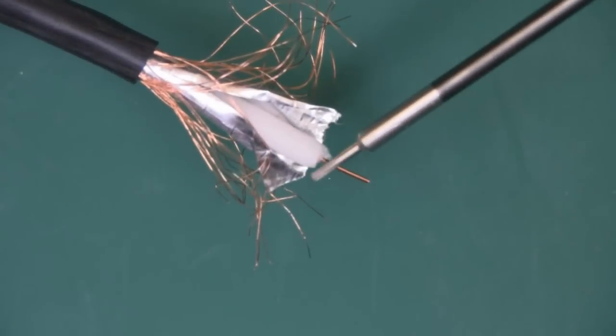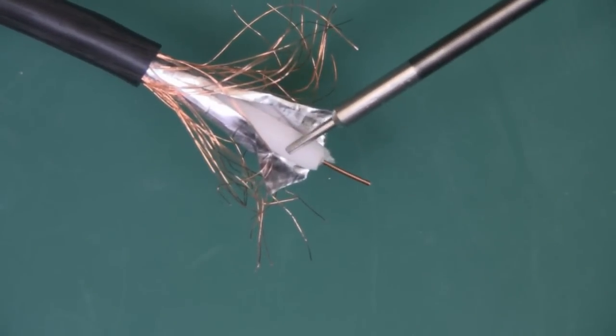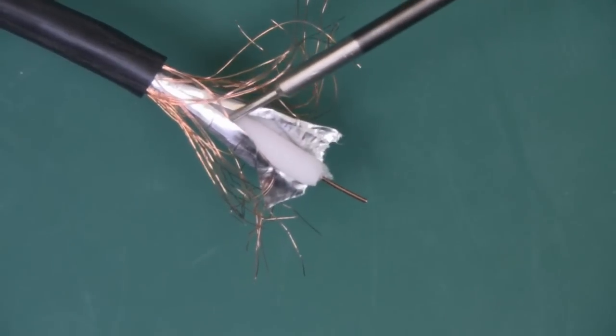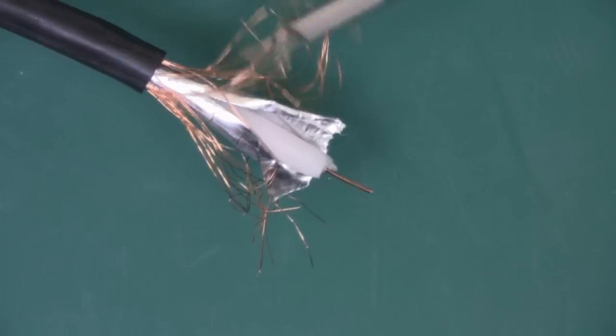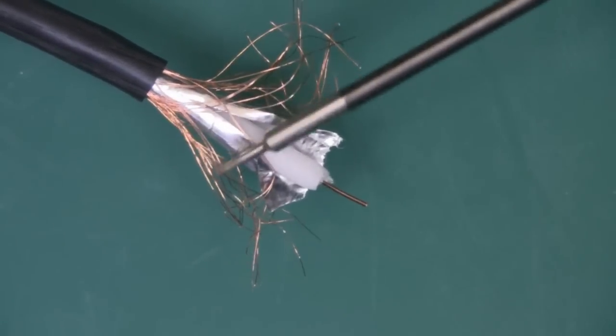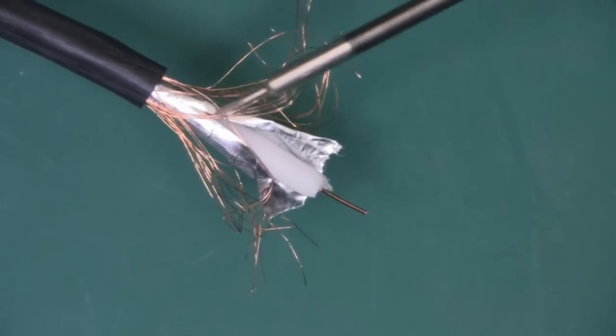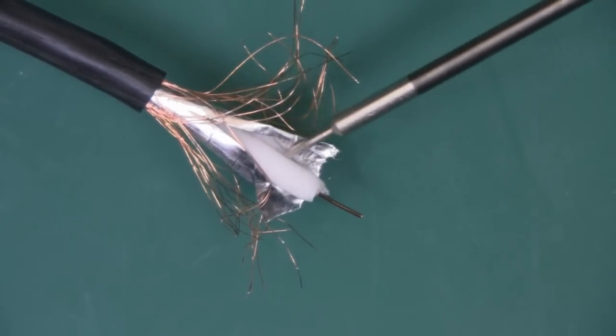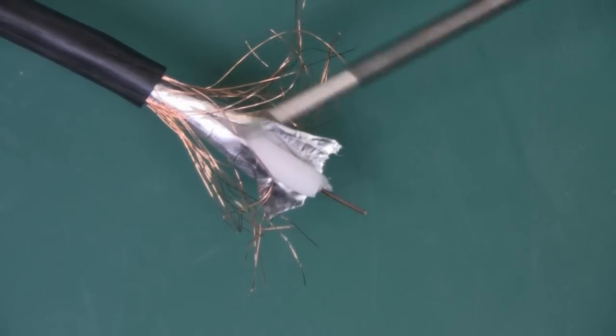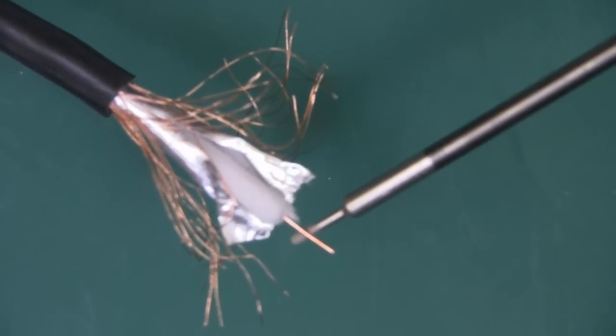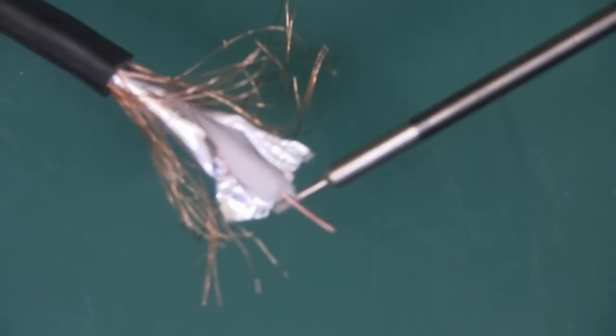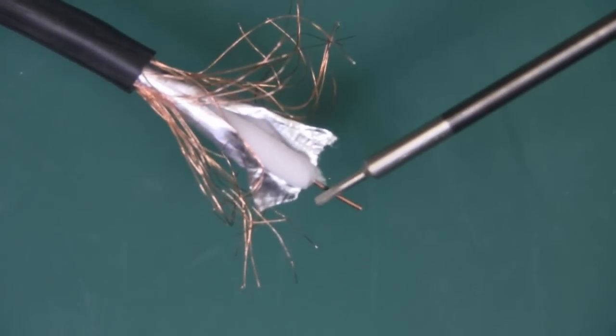This is the counterfeit LMR coax that was sold to me on eBay some time ago now, and you can see here the outer braid, there's actually no weave to that outer braid at all. We have this aluminium foil between the outer braid and the centre dielectric, and the inner core is just one single piece of wire, really really thin and flimsy.